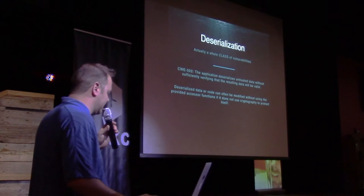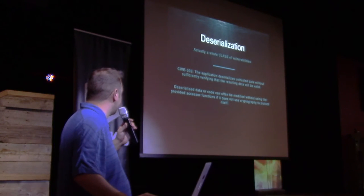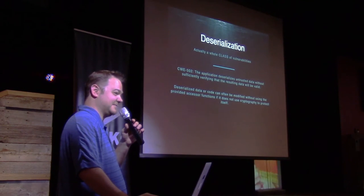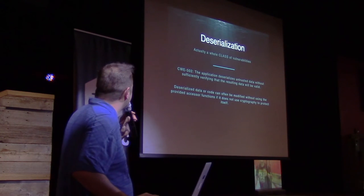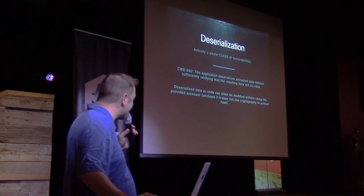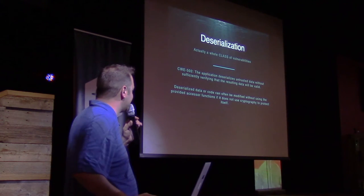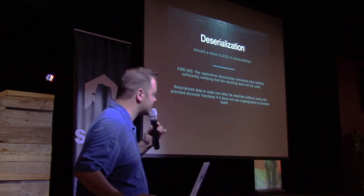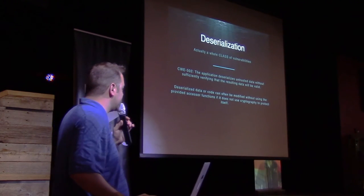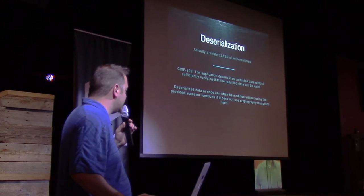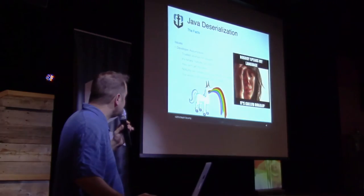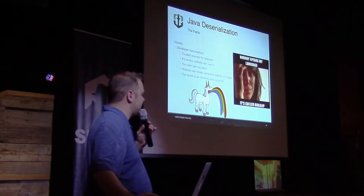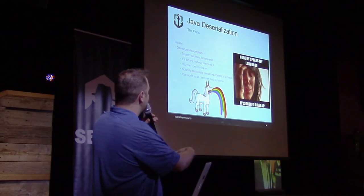Deserialization is actually a whole class of vulnerabilities. For the common web exposures: if the application deserializes untrusted data without sufficiently verifying that the resulting data will be valid, that means you can send objects to a service that accepts serialized objects and it will be processed without pretty much any verification. You can use crypto inside your objects if you want to protect them, but almost no one does.